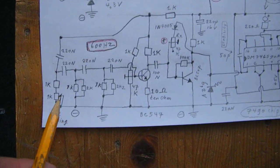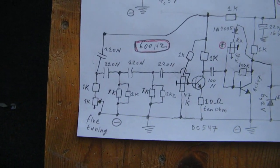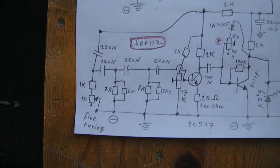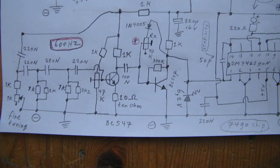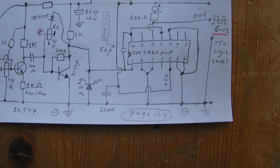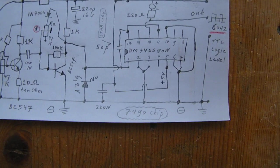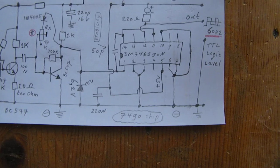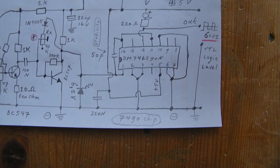Here we have the sine wave oscillator, now in the middle of the screen, the buffer stage, and here a logic chip. It is a 7490 and that is a divider by 10.